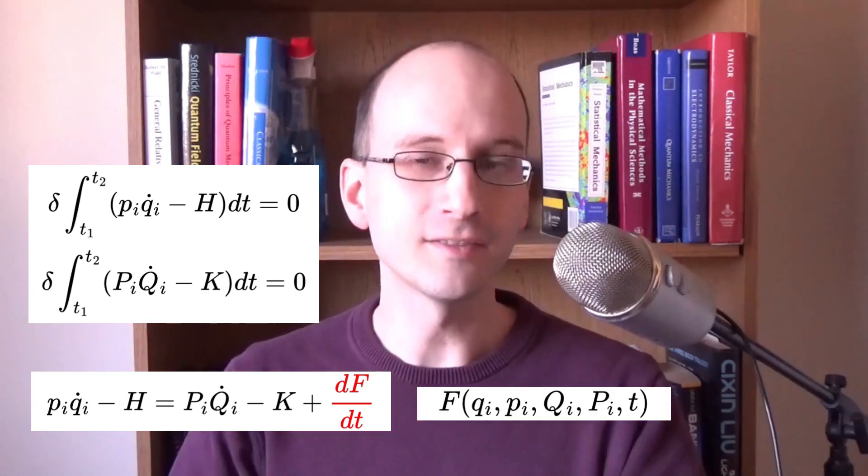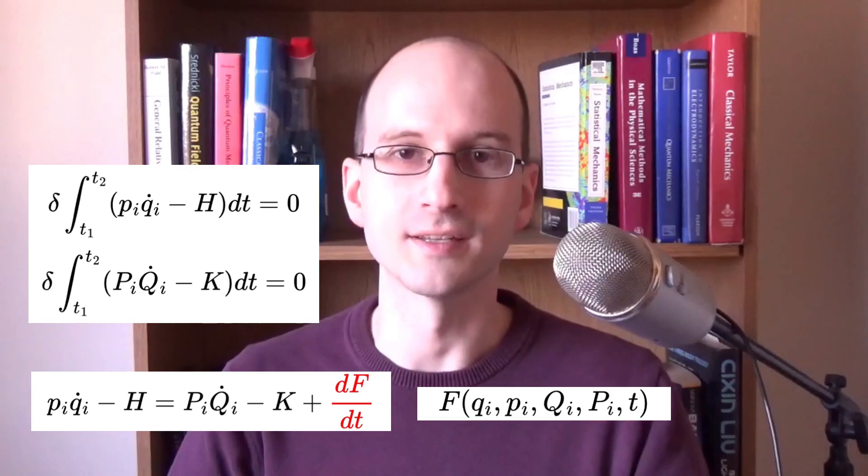What is this, and why are we adding it? It is any function of the canonical coordinates and time, and we're allowed to add it because the variation in it is 0, which means it doesn't contribute to the action. So what is this f, and how can we use it? f is called a generating function. It has no physical interpretation, but we can choose it to be whatever it needs to be so that we can transform one set of coordinates into another. It can be a function of any combination of canonical coordinates and time, even different sets of canonical coordinates.